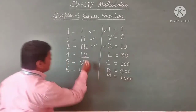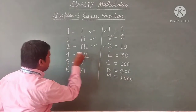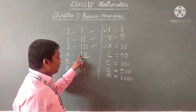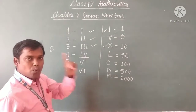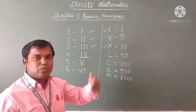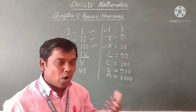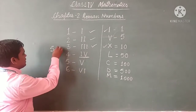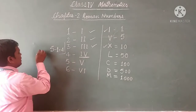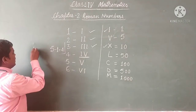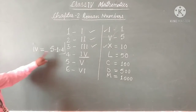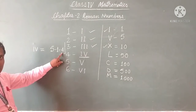For example, look here. The value for V is 5 and the value for I is 1. So if I is written before V, it means we have to subtract 1. That is 5 minus 1. That is why IV equals 4. So IV means 5 minus 1, which is 4. I hope you understood.